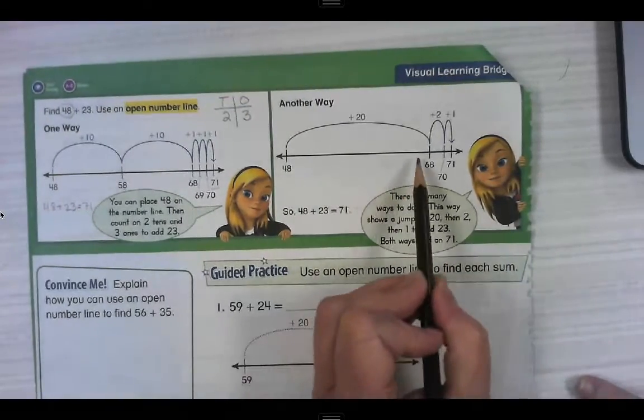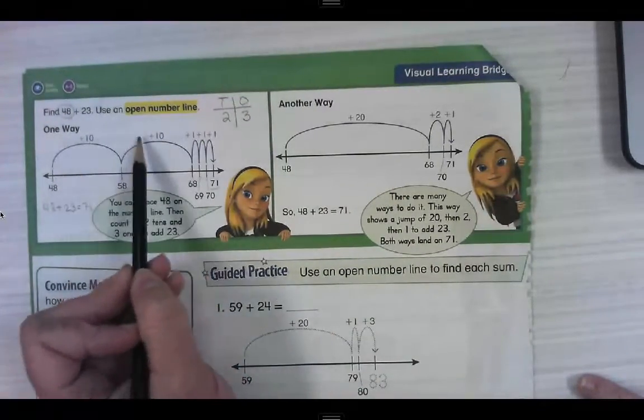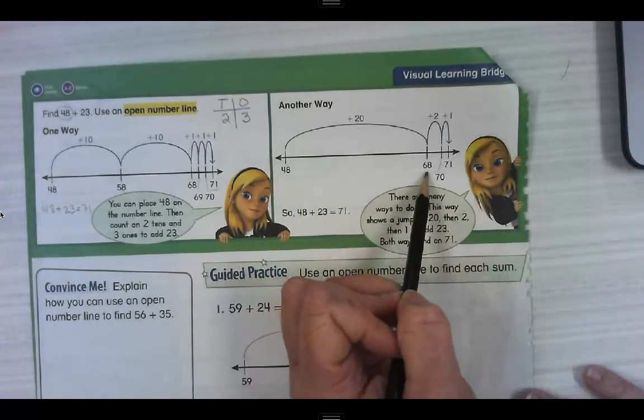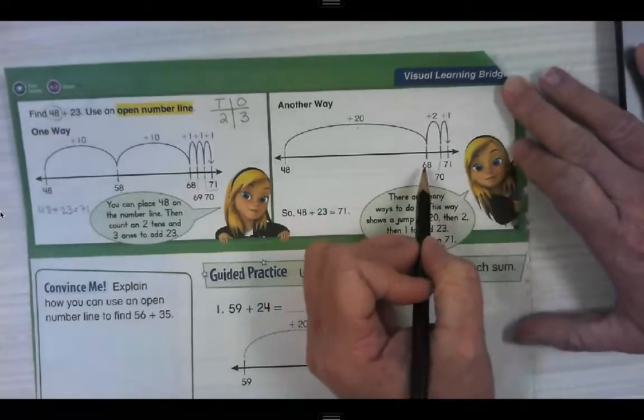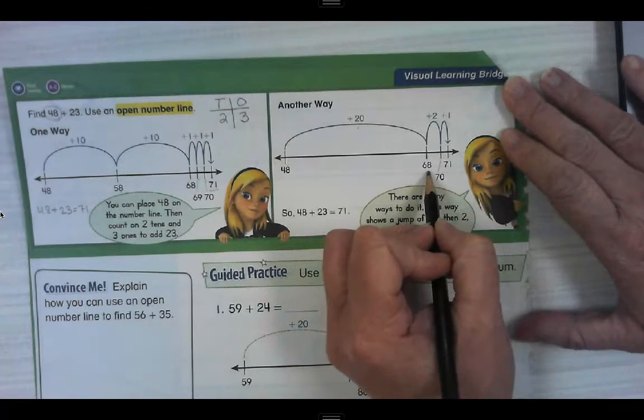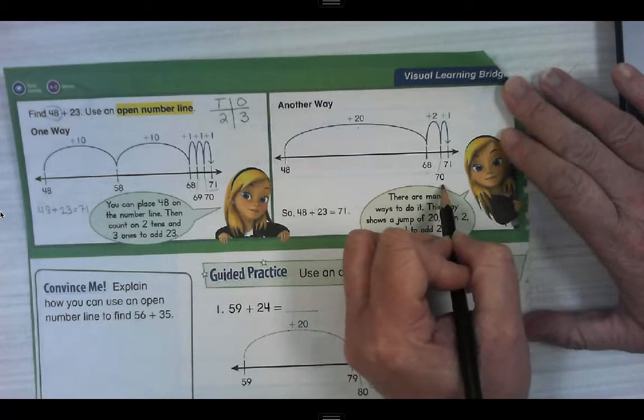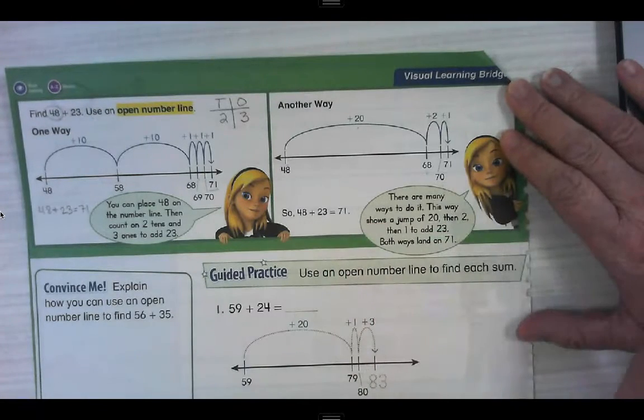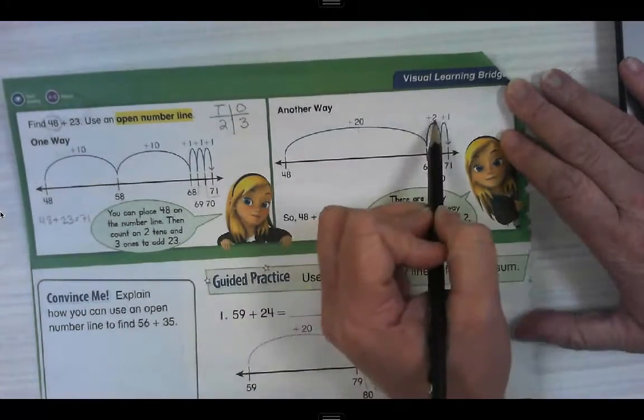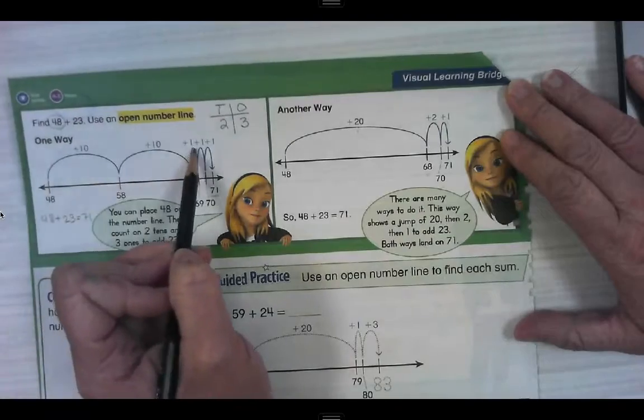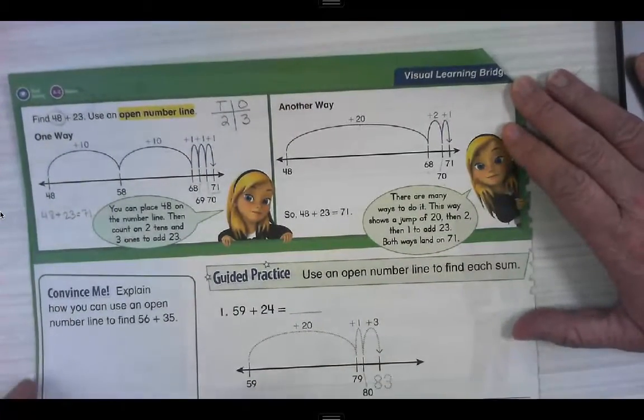Over here, they're going to show you another way where they put these two together. 48 plus two tens in one jump takes you to 68. And then, this is interesting. They added two and then one. 68 plus two takes you to 70. That's interesting. So they made a 10, and then 70 plus one more makes 71. Either way, we're adding 20, 22, 23, 10, 20, 21, 22, 23. So you can break it up all sorts of different ways.